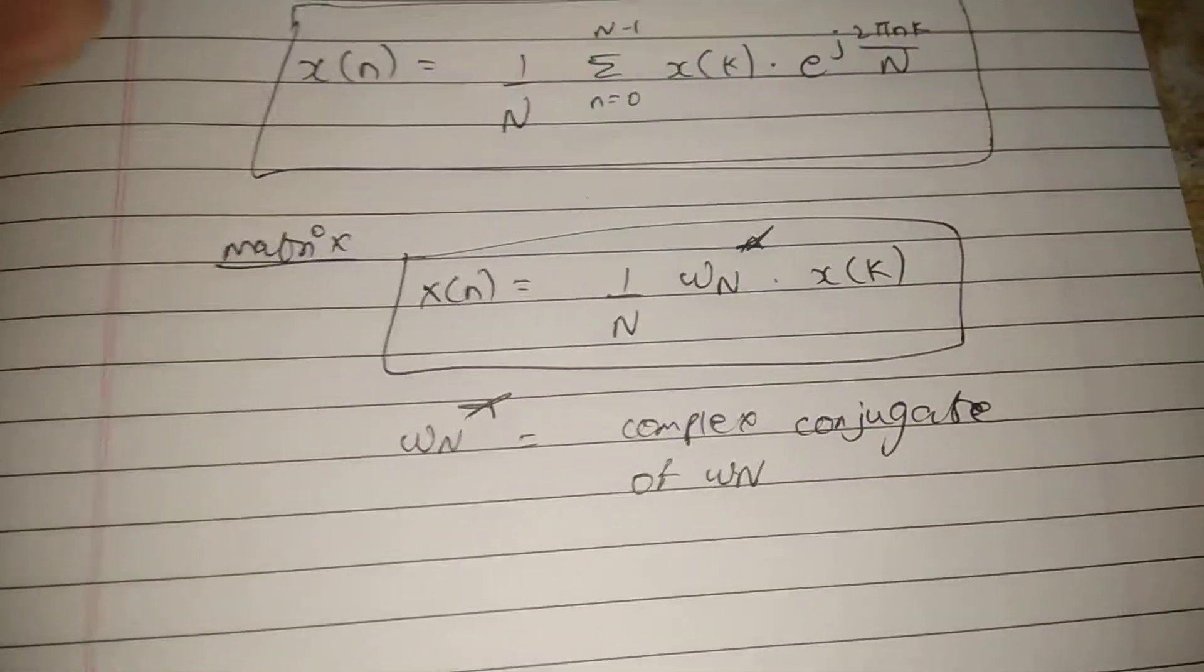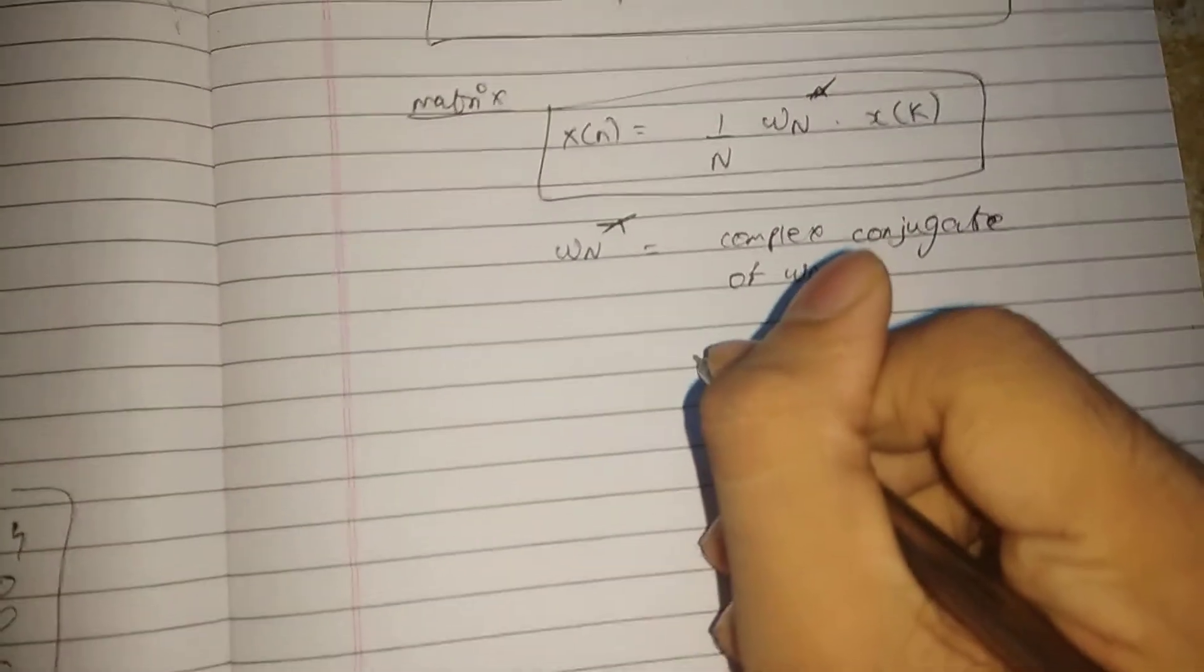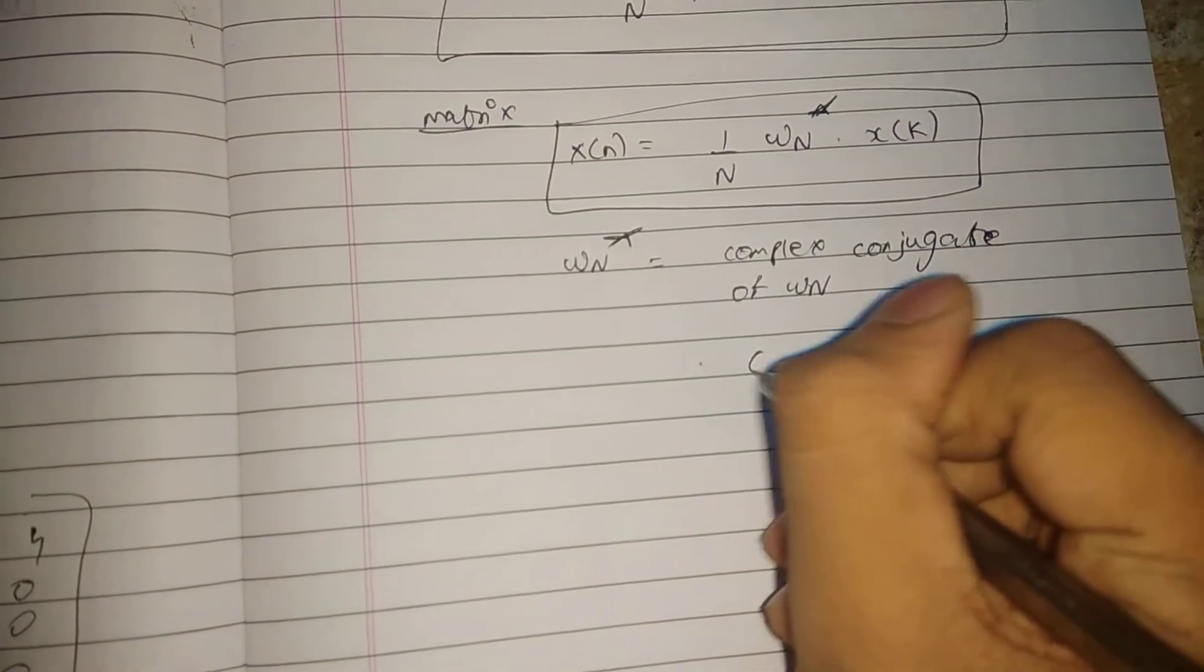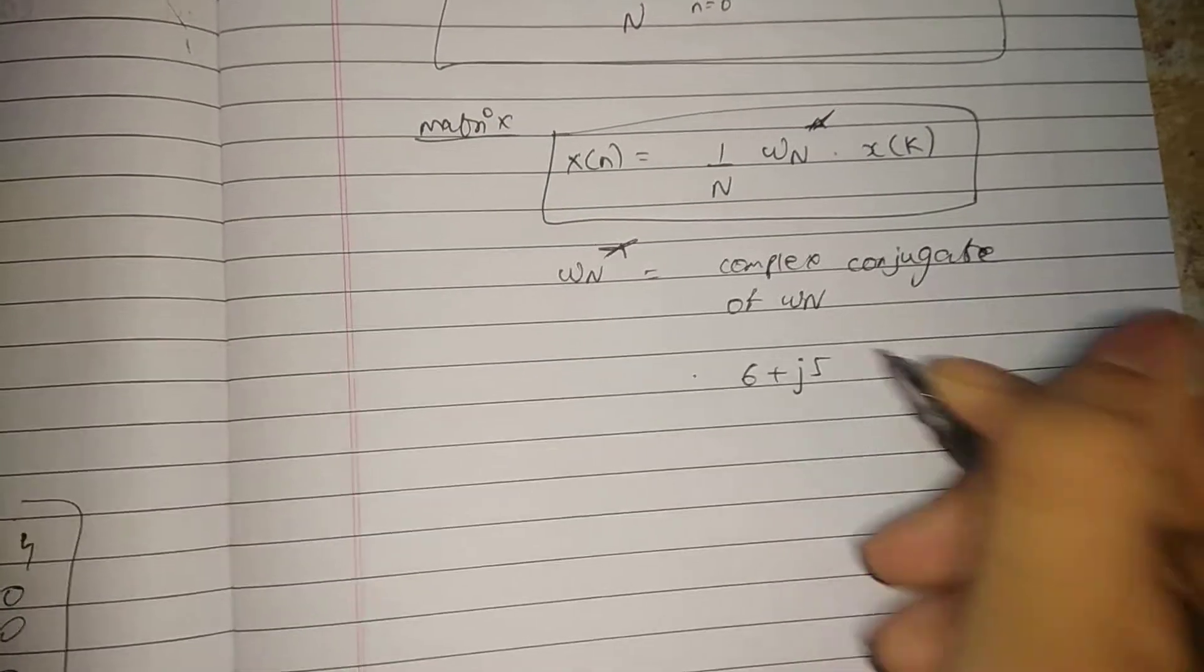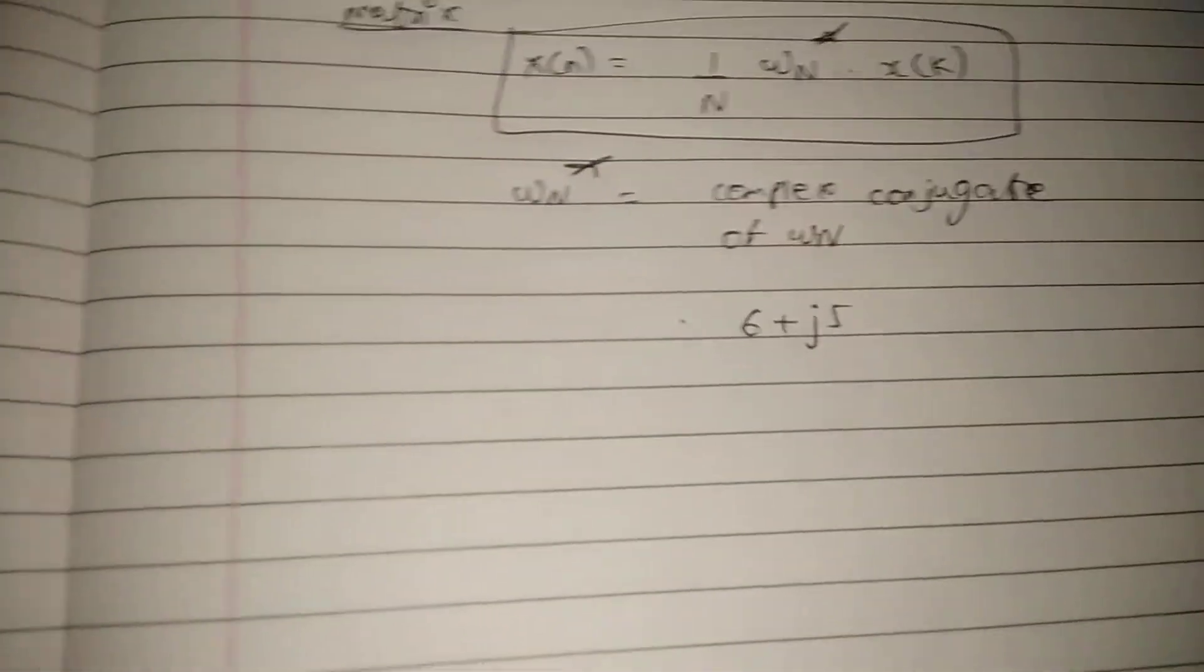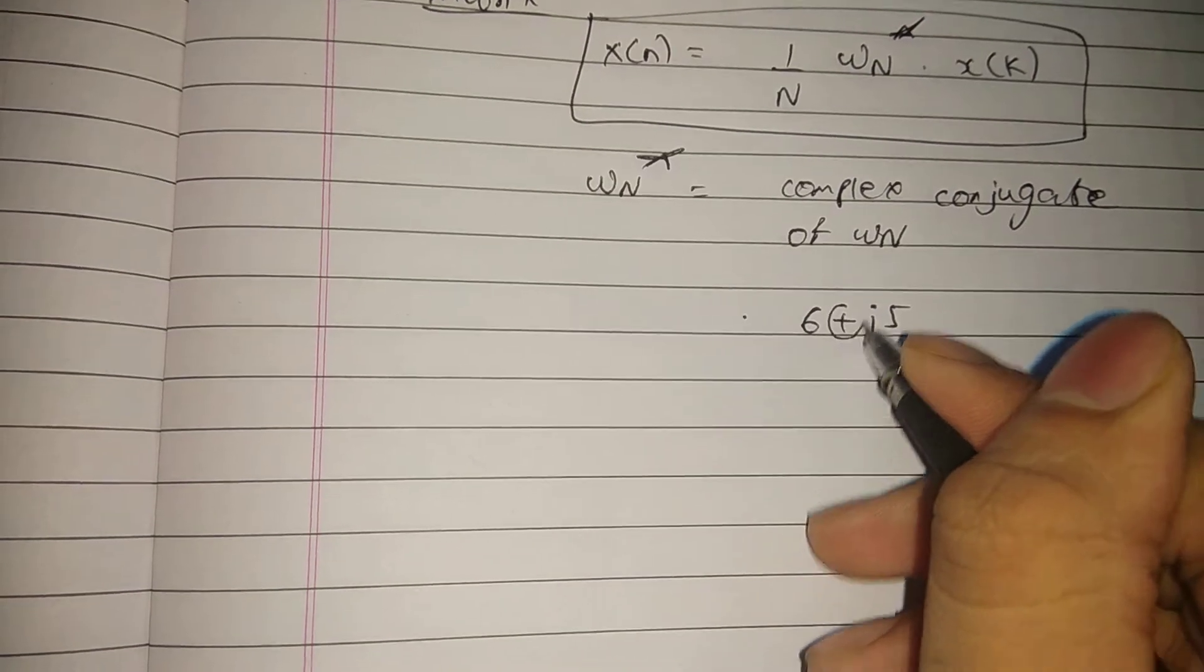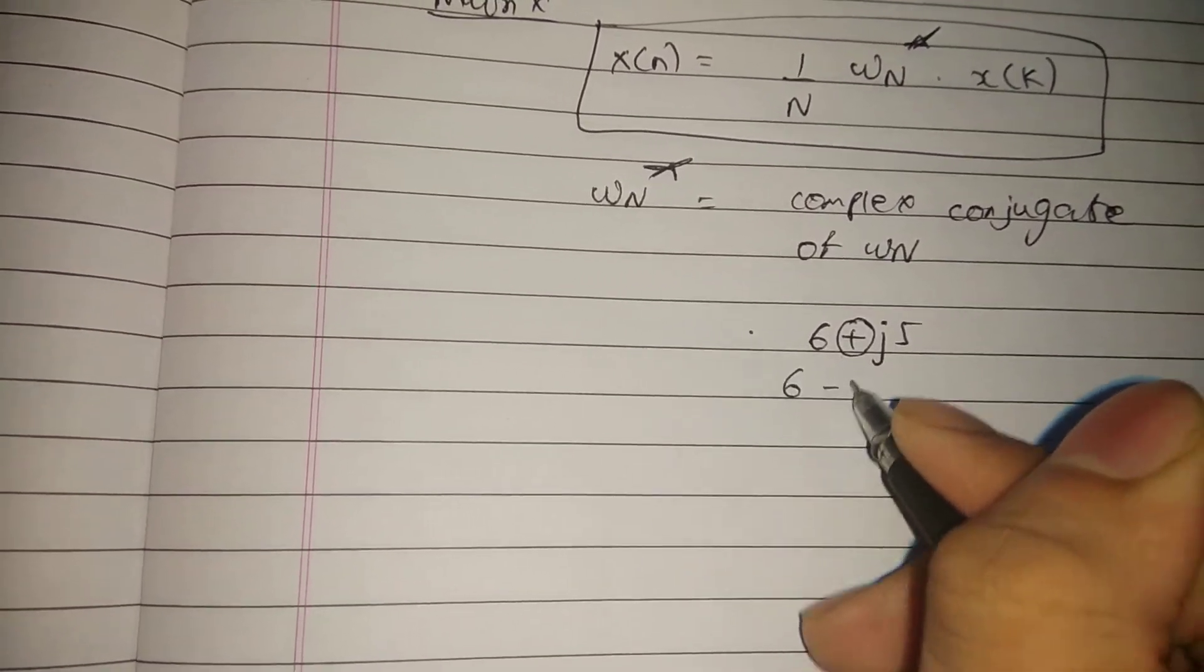What is a complex conjugate? For example, if you have 6 plus j5, the complex conjugate is found by keeping the real part the same and changing the sign of the imaginary part. So it becomes 6 minus j5. Only the imaginary part sign changes.